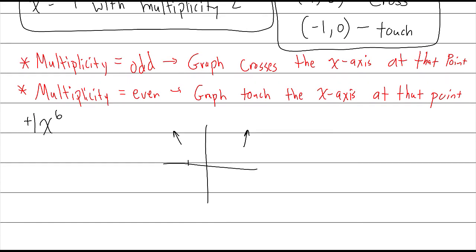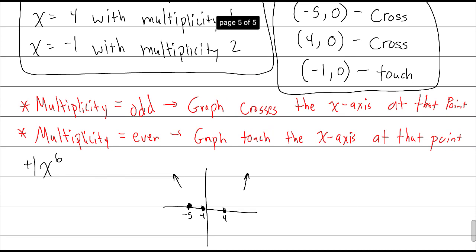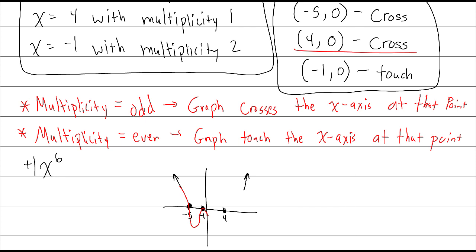I'm going to sketch the graph from what I know. The leading term is x to the 6th, so the leading coefficient is positive 1, meaning the graph goes up to the right. The degree is even, so the left side matches the right — it also goes up. I place the three points at negative 5, negative 1, and 4. At negative 5 the graph crosses; at negative 1 it touches and bounces off the x-axis; at 4 it crosses again. That's what the graph looks like.